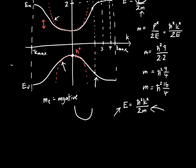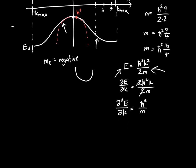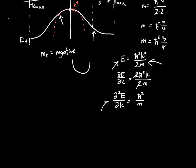If we want to find the curvature of this parabola, we know that curvature is related to the second derivative. We take the first derivative with respect to K, and we get 2 h-bar squared K over 2M. Then we take the second derivative, which gives us the curvature, and that's equal to h-bar squared over M. So this quantity, the second derivative of energy with respect to momentum, can be evaluated for any EK diagram.